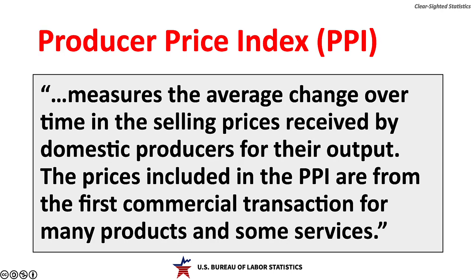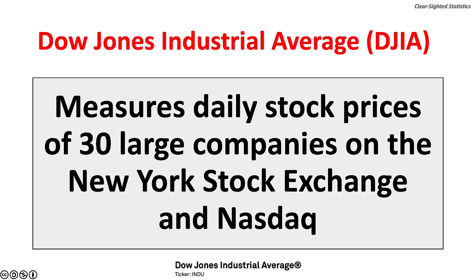Closely related is the U.S. Bureau of Labor Statistics Producer Price Index, or PPI, which measures the average change over time in the selling prices received by domestic producers for their output. The prices included in the PPI are from the first commercial transaction for many products and some services. The Dow Jones Industrial Average is published by Standard & Poor's Dow Jones and was started in 1896. It measures daily stock prices for 30 large companies on the New York Stock Exchange and NASDAQ.